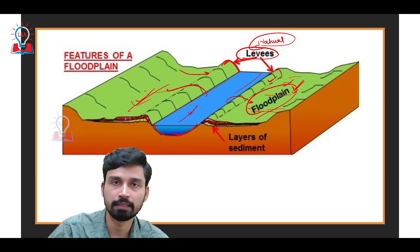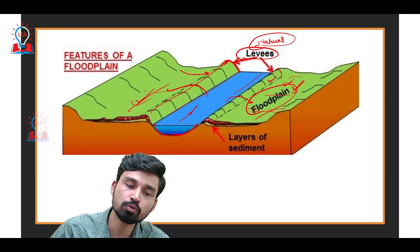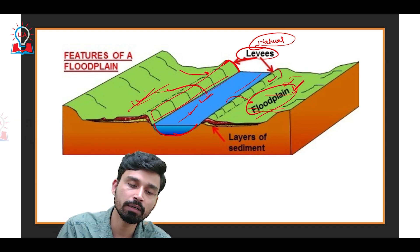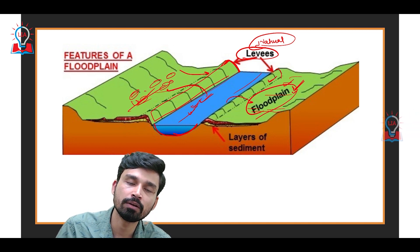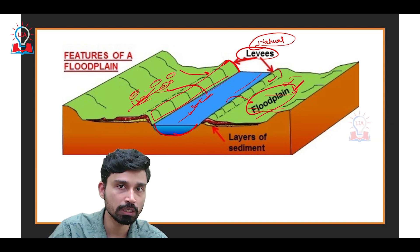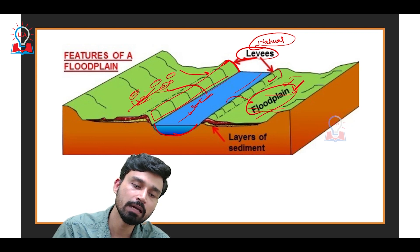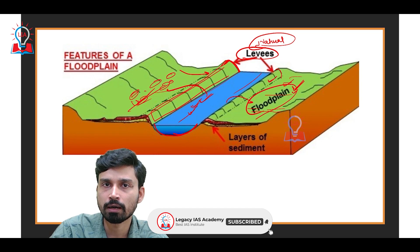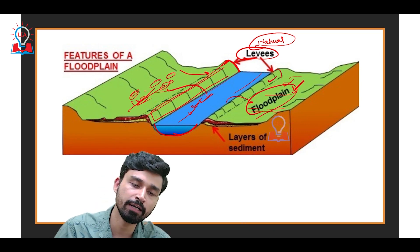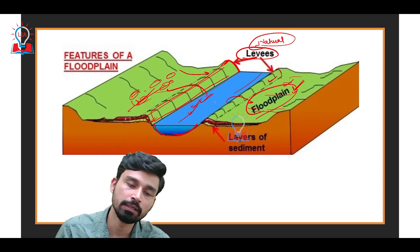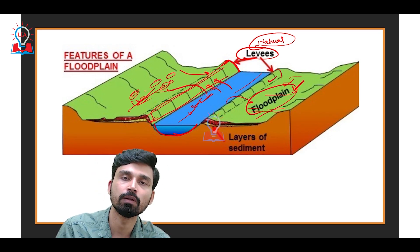Natural levees are embankment-like structures that develop due to continuous deposition of sediment by the river during recurrent flooding. They act as a protective barrier against severe floods and protect settlements in the adjoining regions. In India, especially in the northern part where floods are regular occurrences, state governments try to strengthen these natural levees using RCC cement and other materials so that they become stronger and can resist flood situations, protecting villages and settlements in these areas.